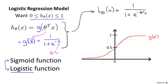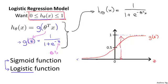You'll notice that the sigmoid function asymptotes at 1 and asymptotes at 0. As z goes to minus infinity, g of z approaches 0. And as z approaches infinity, g of z approaches 1. Because g of z outputs values between 0 and 1, we also have that h of x must be between 0 and 1.